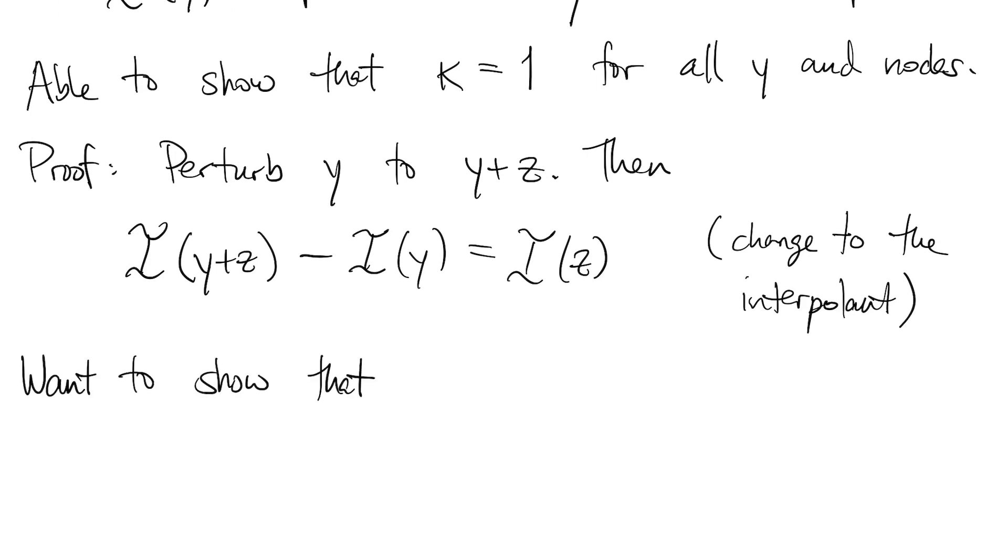So if we can show that the norm of i of z is less than or equal to the norm of z, then the condition number, which is the ratio of the two norms, must be less than or equal to 1. Showing the opposite case that it's greater than or equal to 1 is much easier and I won't put it here.